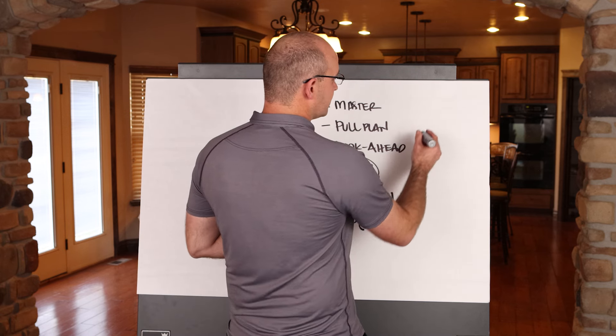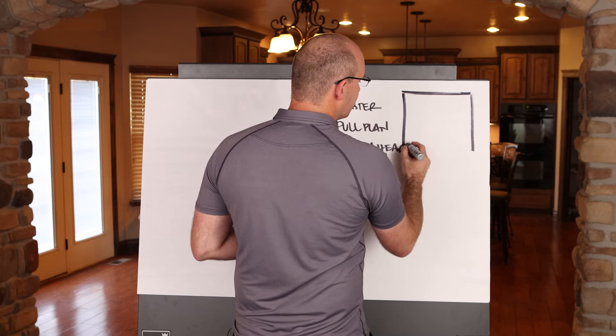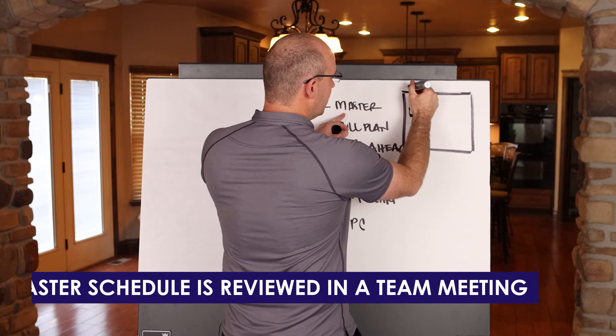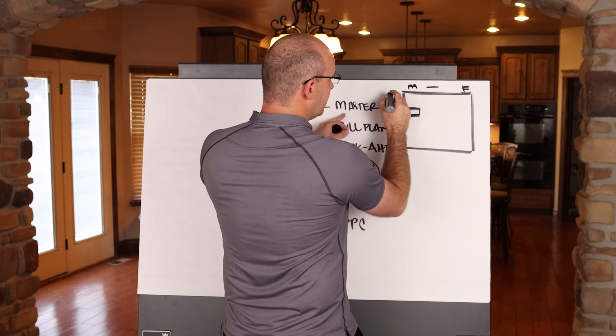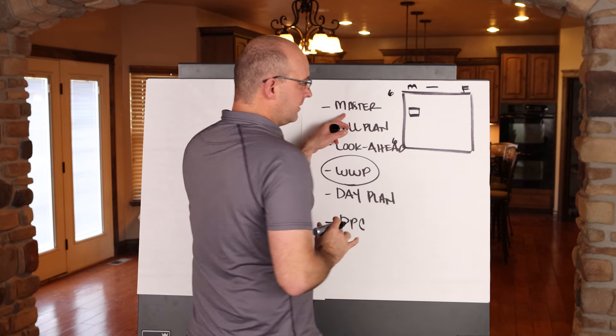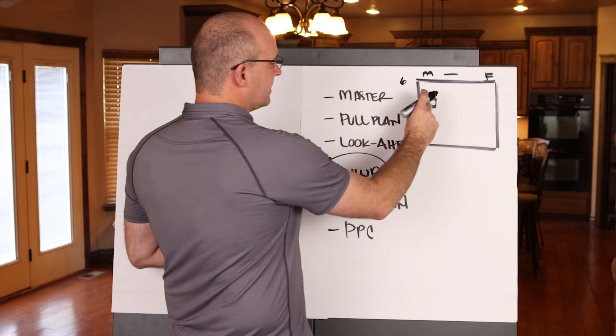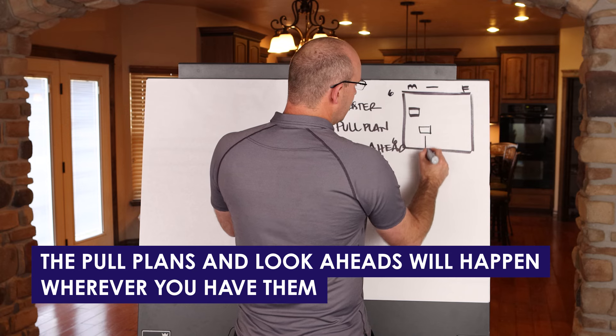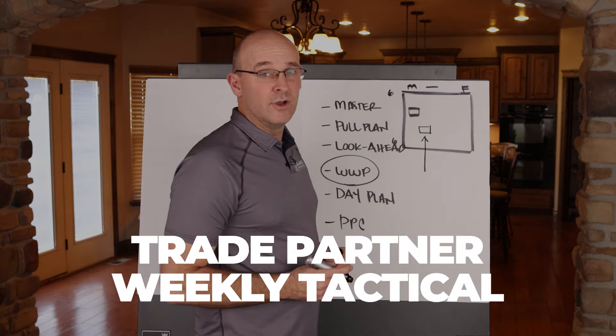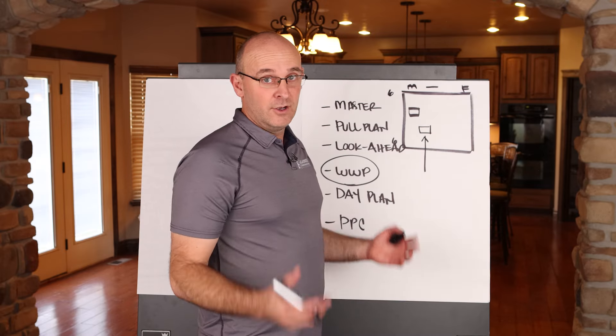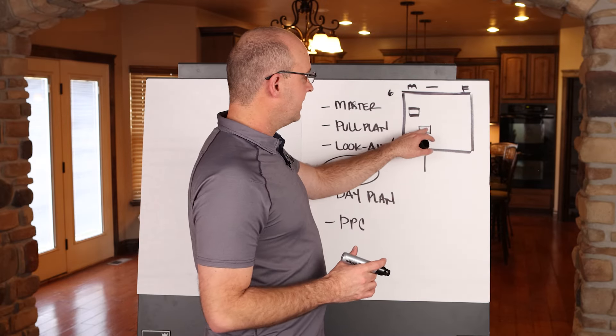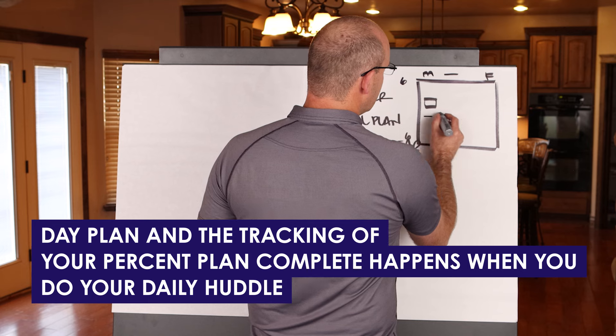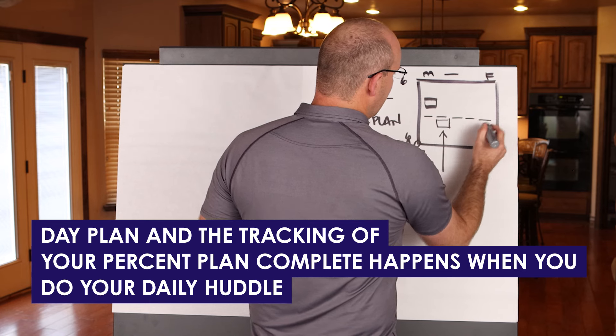So in the meeting structure, typically at a bare minimum, if you look at Monday through Friday, typically the master schedule is reviewed in a team meeting. I'm just going to do M through F here. And let's do six o'clock to six o'clock at night, so 6 a.m. to 6 p.m. The master schedule will typically be discussed in the team meeting. The pull plans and look-aheads will happen wherever you have them in your trade partner weekly tactical, or your Last Planner meeting, or your weekly work planning meeting, or your trade meeting.